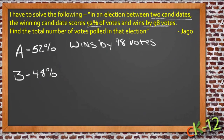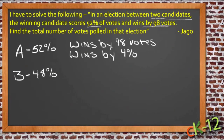Candidate A won by 98 votes and he also won by 4% — he had 52% where candidate B only had 48%. So we can say both of those things about him: he wins by 98 votes and he wins by 4%. Since both of those things are true, they really are both the same thing — two different ways to say how candidate A won — these two things must be equal.